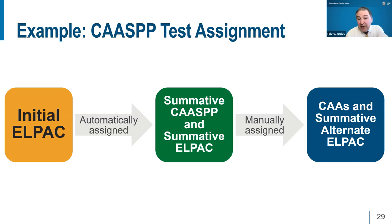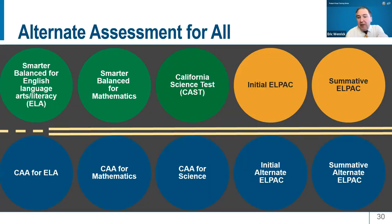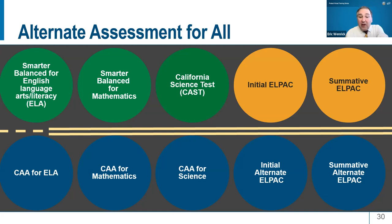If a student is manually assigned to the alternate assessments, think of the saying 'alt for one, alt for all' — alternate assessments in TOMS affect all subjects for the CAASPP. By assigning an English learner the summative alternate ELPAC, that student is also assigned to the California Alternate Assessments for ELA and math and the alternate assessment for science, if applicable for grades 3, 8, or the applicable high school grade. Students automatically will be assigned a science assessment at the end of the process in 12th grade if they haven't taken one yet in high school. Students with the most significant cognitive disabilities who are eligible for alternate assessments must take them in all content areas.